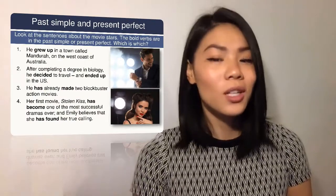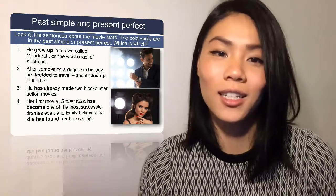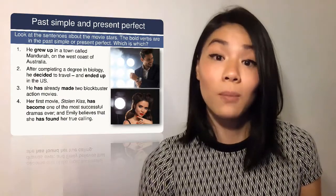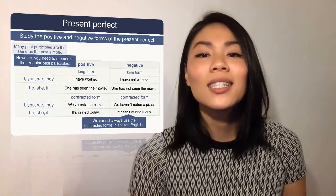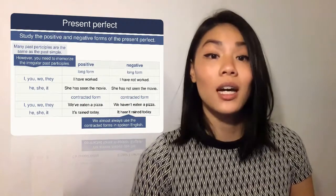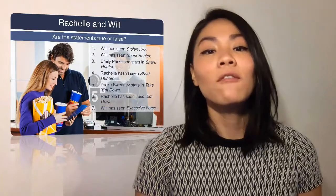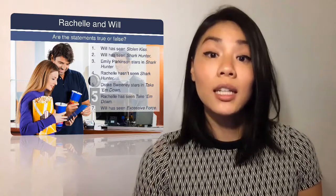Now you're either that teacher that hates or loves the present perfect. I assure you that in unit 23 you will enjoy teaching the present perfect. In order to teach it, you have to know when and why we use it. The present perfect talks about actions that we have or haven't done up to this point in our lives. For example, 'I have traveled to Spain but I haven't traveled in Italy.'